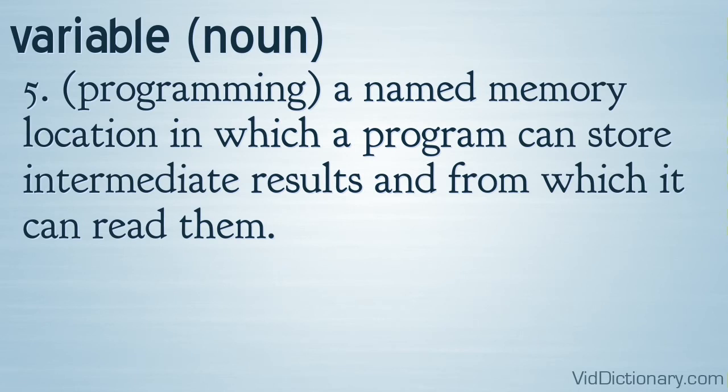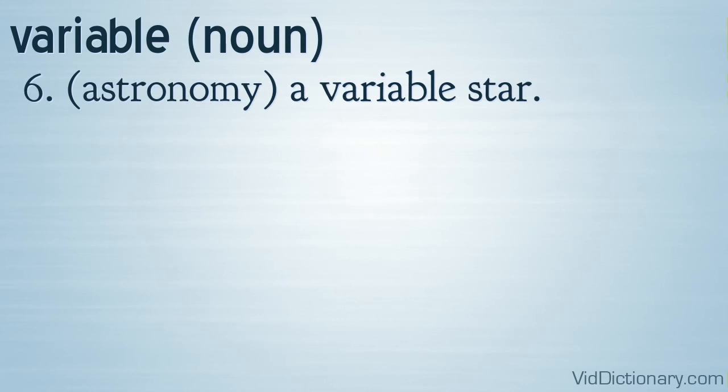Definition 5: Programming, a named memory location in which a program can store intermediate results and from which it can read them. Definition 6: Astronomy, a variable star.